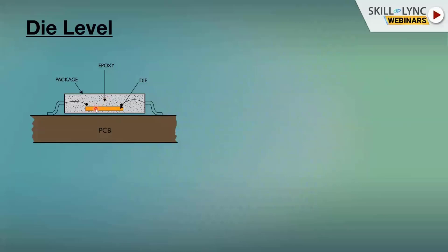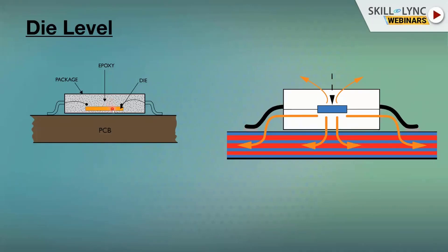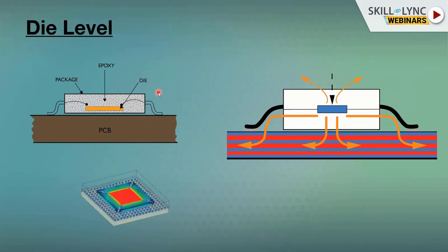The die transports heat through three methods — the three modes of heat transfer: conduction, convection, and radiation. Heat is transferred to the epoxy, wire, and PCB via conduction, to the air via convection, and to surrounding components via radiation. Using CFD we can analyze the thermal performance of components — for example, in a BGA part, we can check the temperature of the die, epoxy, wires, and PCB.